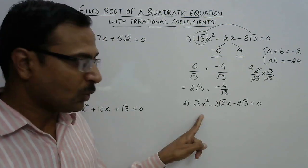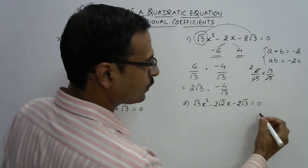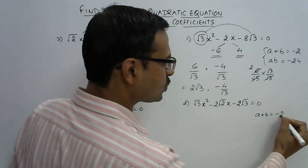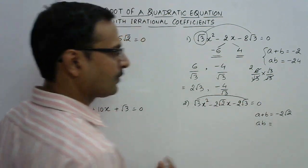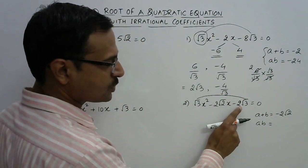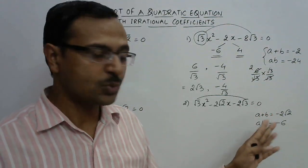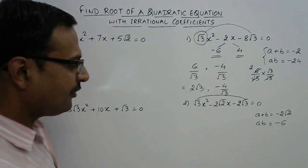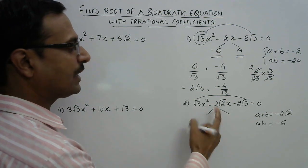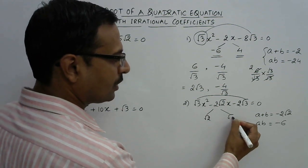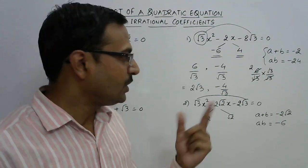Let's have one more question for practice. Here the coefficient of x is -2√2. We need two numbers whose sum is -2√2 and whose product is √3 × √3 × 2 = -6. If both factors contain √2, then their sum will also contain √2.